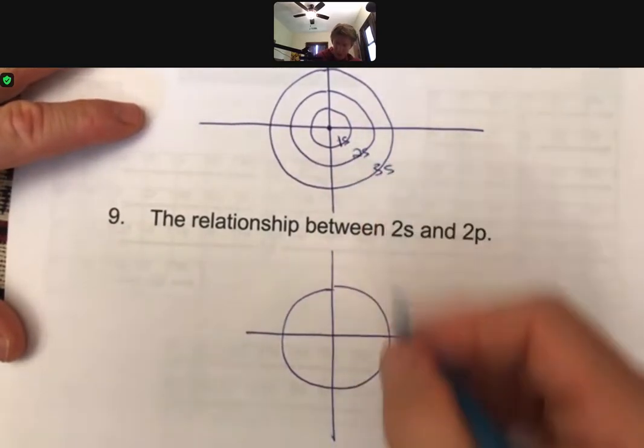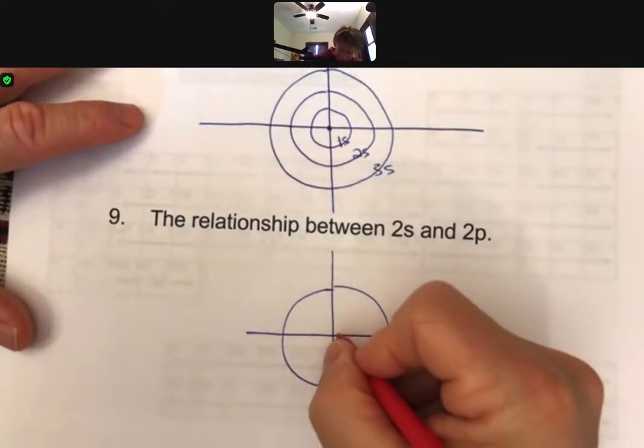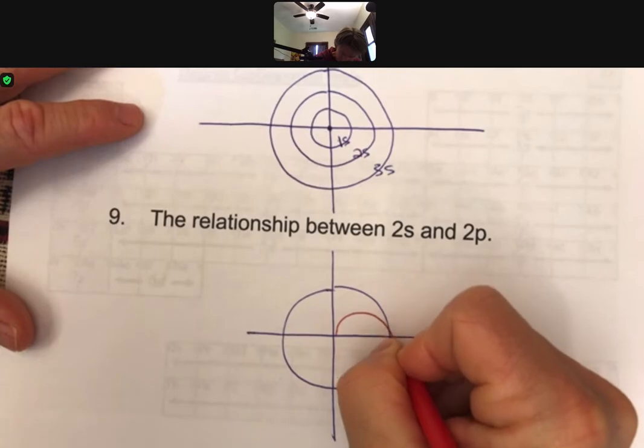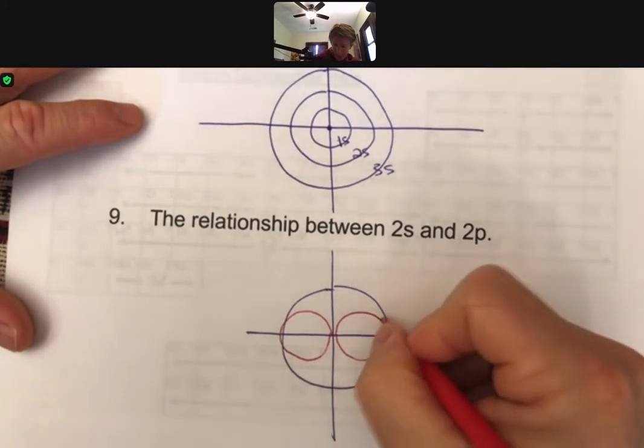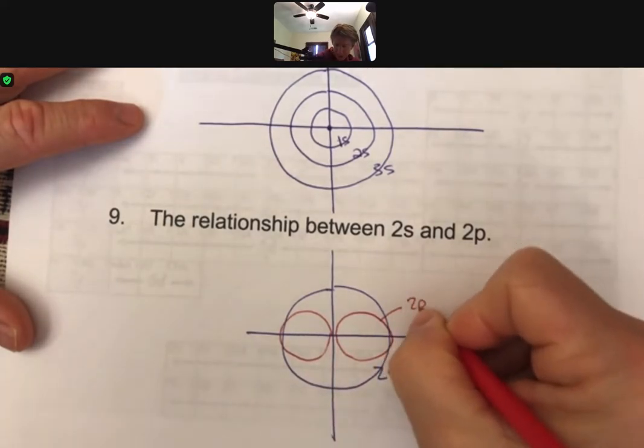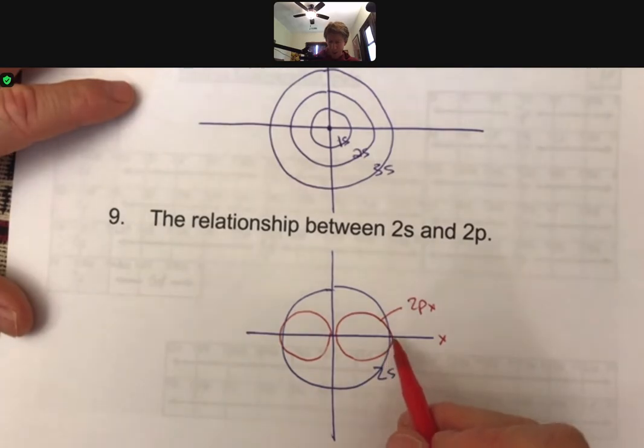So there's 2s from up above, and we said that the 2p's are - and this is gonna be 2px. So the 2p's don't touch the nucleus, and they end at about the same distance away from the nucleus as the 2s does.